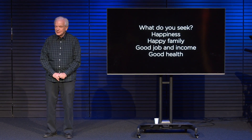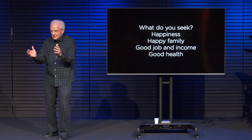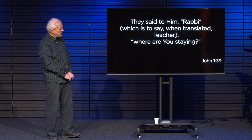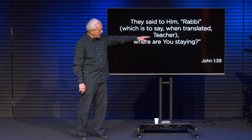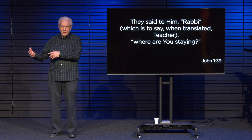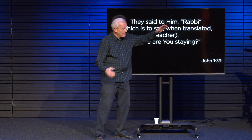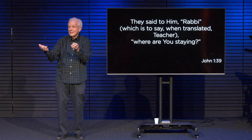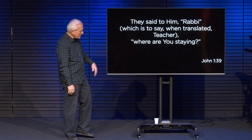Now, what did those two men say when Jesus said 'What do you seek?' They said to him, 'Rabbi' — which is to say when translated, 'Teacher' — 'where are you staying?' The word Rabbi is the Jewish term; Teacher is the English translation for what the Roman culture would have understood. John is writing not just to Jews but to the whole world, so he translates it 'teacher' so that we could all relate to it.